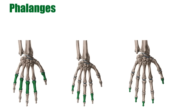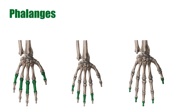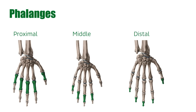The phalanges are the terminal bones for the upper limb, meaning this is the end of the road. There are three sets of phalanges: the proximal, the middle, and the distal. The exception is the thumb, which has no middle phalanx, just distal and proximal.